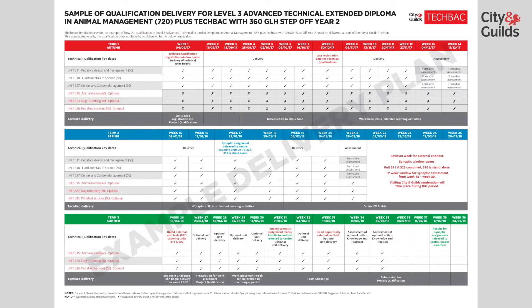During Term 2, learners will continue to receive teaching on the mandatory content. They will also start to receive teaching on the three optional units. The synoptic assignment will be released to the centre in week 18, and learners will then be given the opportunity to collect evidence, research and produce work for that synoptic assignment. Tasks will be carried out under controlled conditions and the synoptic assignment marks will be uploaded by week 26. Learners during this time will additionally be revising for their end test, which will be on the mandatory content of the second year only, taking place in week 25.